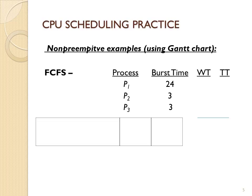We have three processes and we're going to assume that these processes all arrived at time zero in this order: P1, followed by P2, followed by P3. Burst time means the time that the process has on the CPU — its CPU burst time. We use this Gantt chart starting at time zero, where all processes are in the ready queue but arrived in the order P1, P2, P3. So the first one to go will be P1.